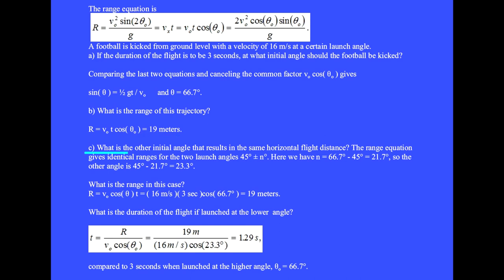Question C: What is the other initial angle that results in the same horizontal flight distance? The range equation gives identical ranges for the two launch angles 45° ± n°. Here we have n = 66.7° - 45° = 21.7°. This is the higher angle. So the other lower angle is 45° - 21.7° = 23.3°.